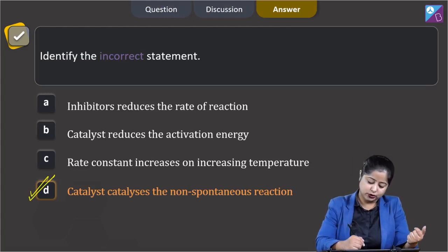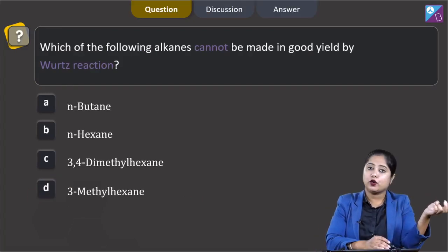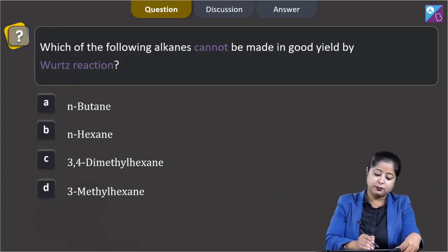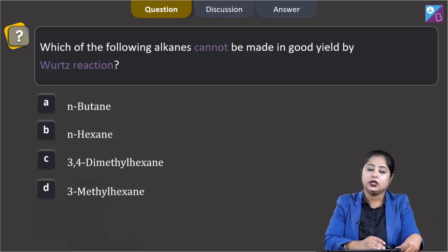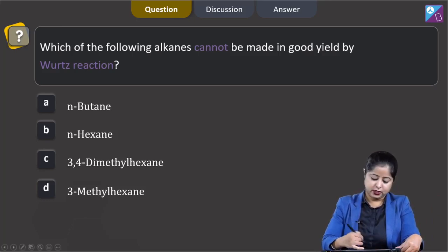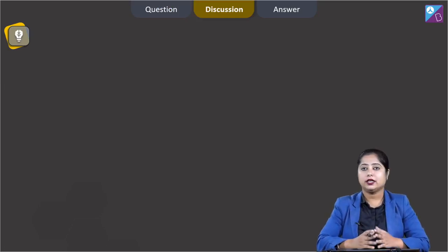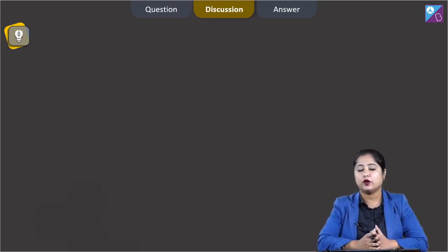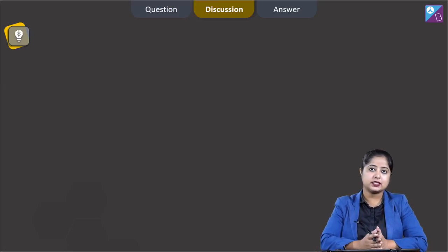Moving to the next question: which of the following alkanes cannot be made in good yield by Wurtz reaction? The options are N-butane, N-hexane, 3,4-dimethylhexane, and 3-methylhexane. For this question, we need to know that Wurtz reaction is used for the preparation of symmetrical alkanes.